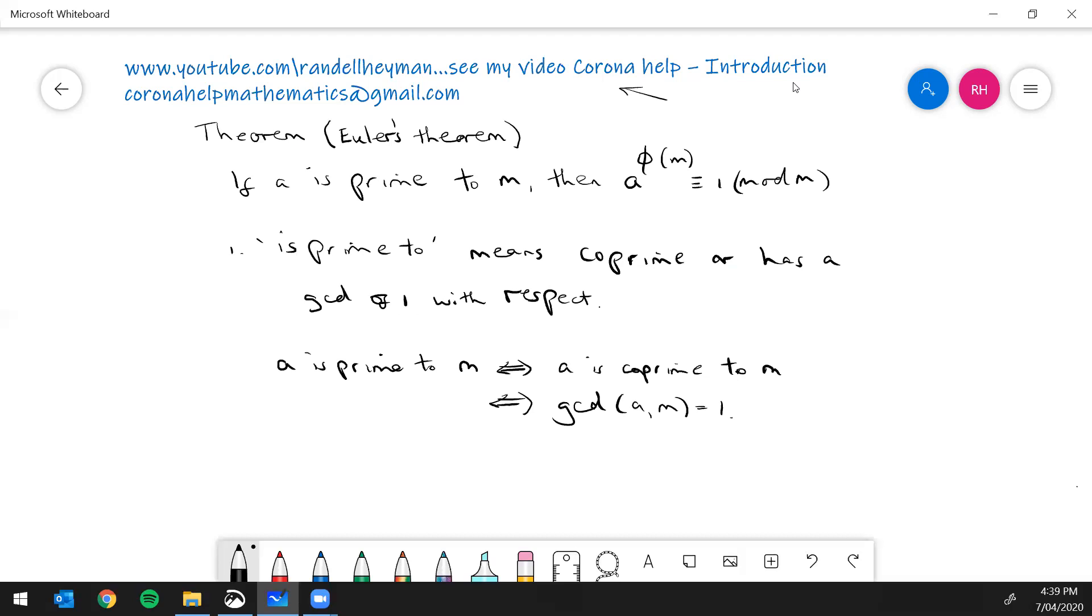Now the next thing is this Greek letter phi, φ(m). So φ(m) is equal to, firstly we start with the set {j such that 1 < j < m and gcd(j,m) = 1}. That's the set and then the cardinality of the set, in other words the number of elements of the set.